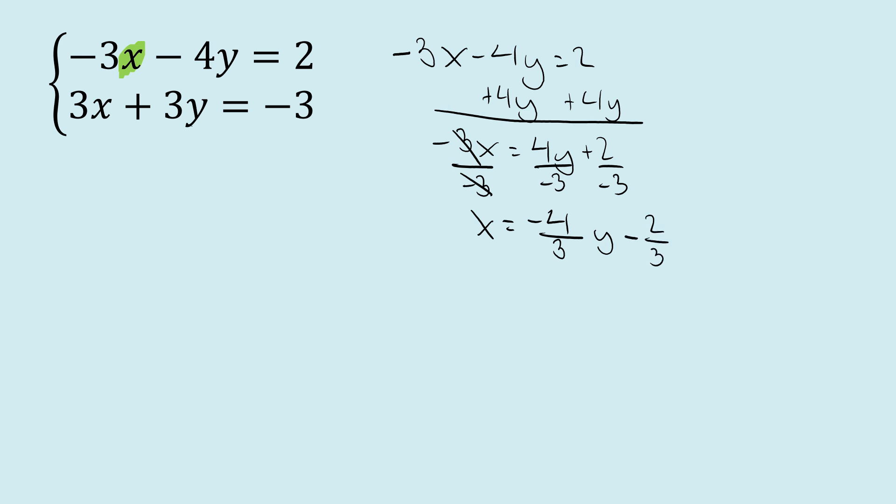And I get x is negative 4 over 3y minus 2 over 3. So we've solved our variable. We've isolated our variable. We know that x is equal to this quantity here, negative 4 over 3y minus 2 over 3.